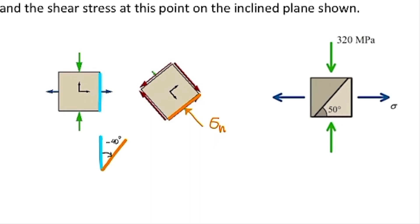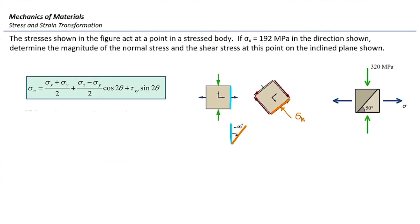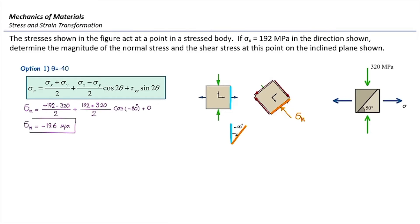Now let's see what equation we should use. We have started from the right surface. The right surface is the x direction, and x is associated with the n axis after rotation. So I'm going to use the sigma_n equation for this problem. Plugging in, we get sigma_n equal to negative 19.6 MPa. That is the magnitude of normal stress on that plane. In the same way, I can determine the shear stress.